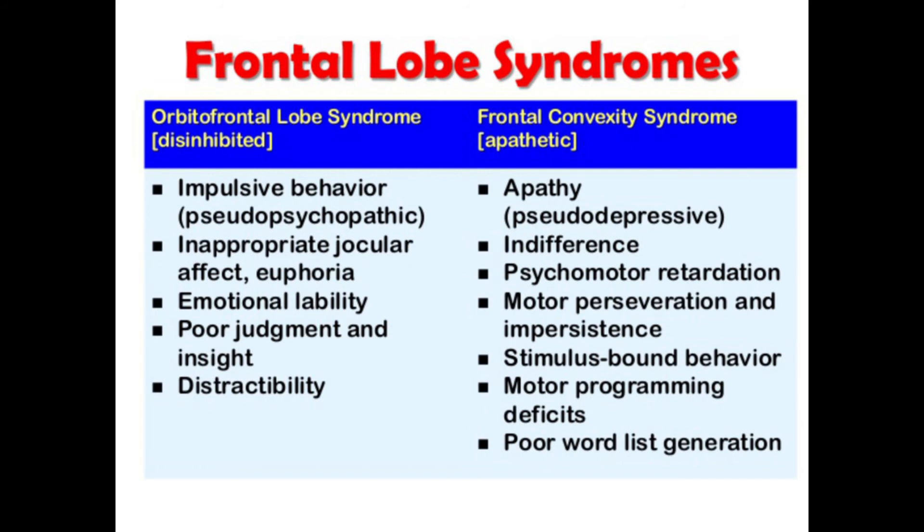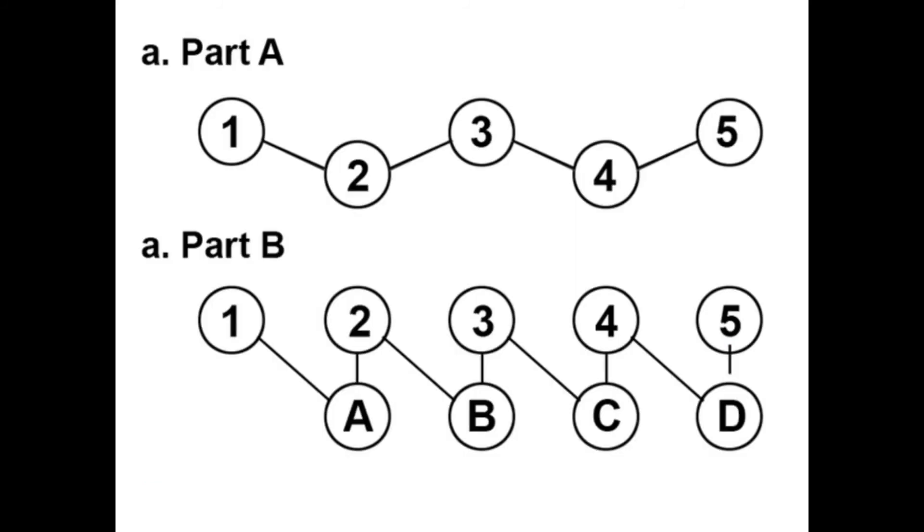Then there is some classification of frontal lobe syndromes, you will see, you will read that in the text. This is just examples of some tests they use to measure some cognitive abilities. The A one refers to the trail making test, part A, in which the patient has to just put together the numbers in ascendant order.